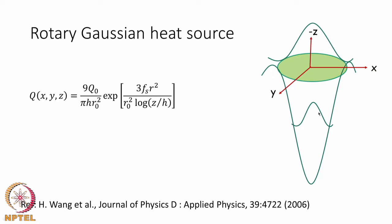One can also use what is called a rotary Gaussian heat source, which looks quite similar to a conical heat source. However, it is not a function going as (1 + z/h) or (h² / (h² − z²)), but actually as 1/log(z/h), which changes the way heat absorption varies from the top to the bottom of the keyhole.